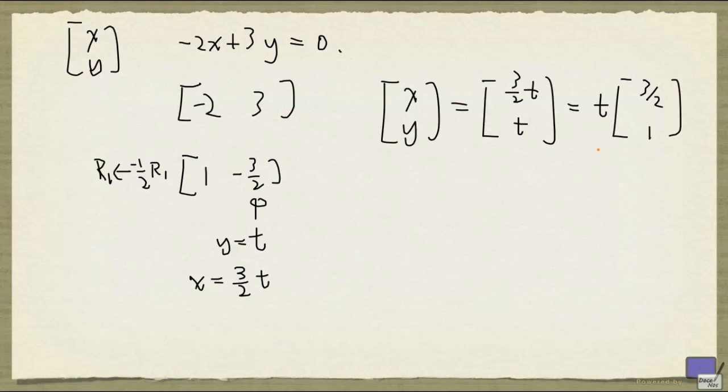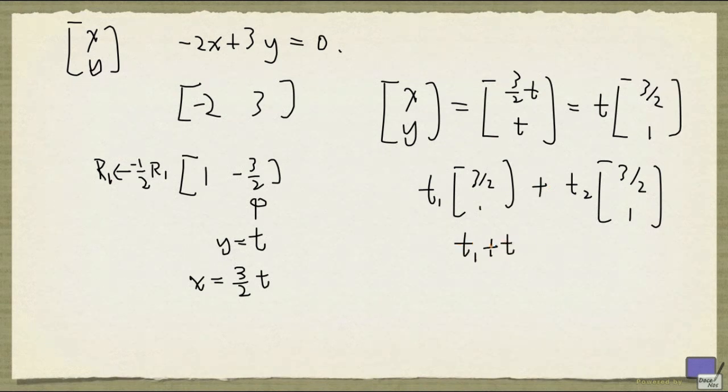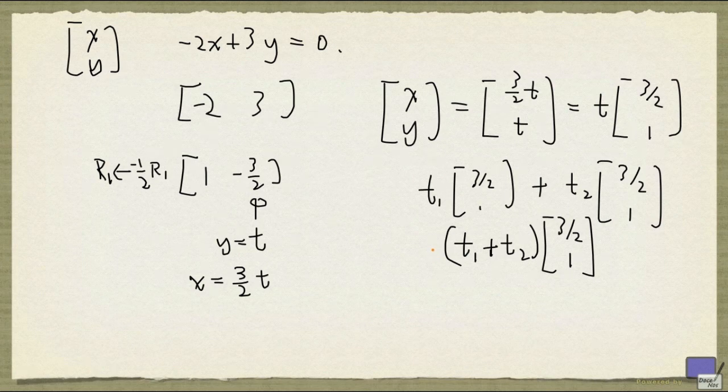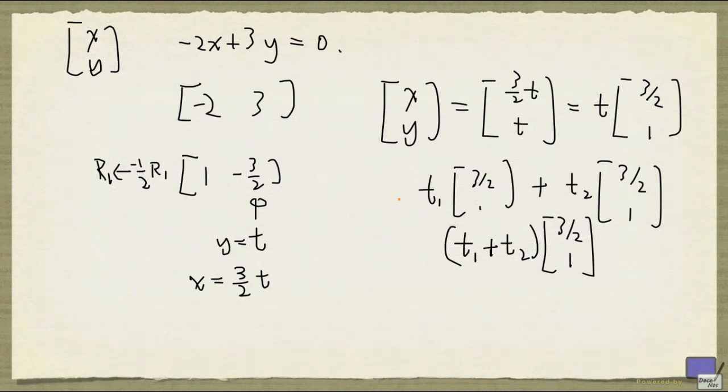This gives all the points on the line. Any point on the line can be written like this. So if you have 2 points on the line, say t1 times (3/2, 1) and t2 times (3/2, 1), and if you add them, you get precisely (t1 plus t2) times (3/2, 1). This is precisely the same form, so it's on the line. And if you multiply this by another constant, again you get back something of the same form. So for this small example, we have verified algebraically that if you add any 2 points on the line going through the origin, you'll get back a point on the line, and multiplying a point on that line by a constant, you'll get back a point on that line as well.